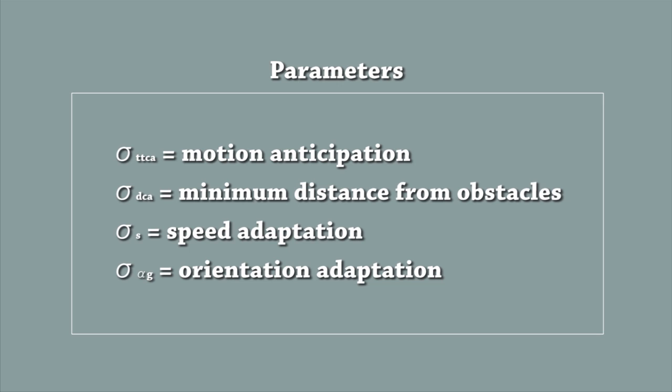Now let's take a look at the model parameters. Our cost function depends on four very intuitive parameters which are used to control the motion anticipation, the minimum distance to keep from obstacles, the speed adaptation, and the orientation adaptation of each agent.